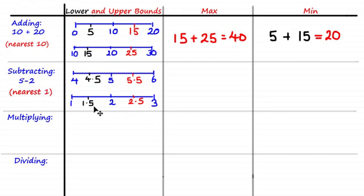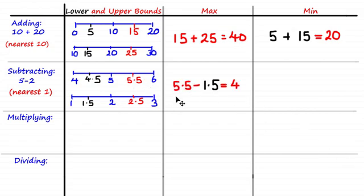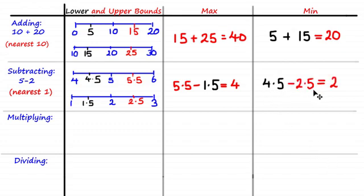To calculate the maximum when subtracting, you need to be careful: you subtract the smallest number from the largest number. So we do the upper bound of 5 (which is 5.5) minus the lower bound of 2 (which is 1.5): 5.5 minus 1.5 equals 4, giving the maximum. For the minimum, we do the lower bound of 5 (4.5) minus the upper bound of 2 (2.5): 4.5 minus 2.5 equals 2.